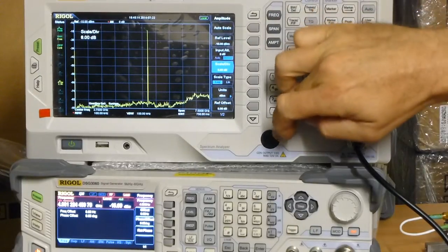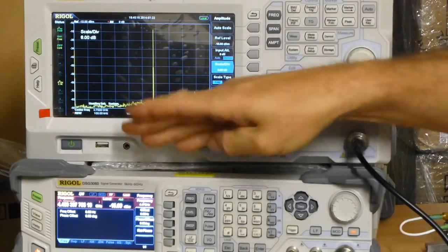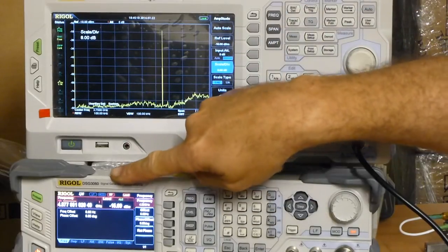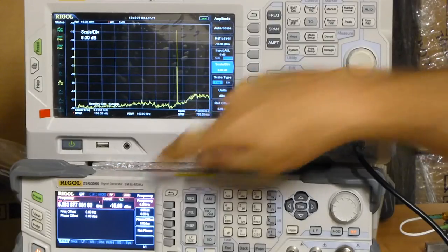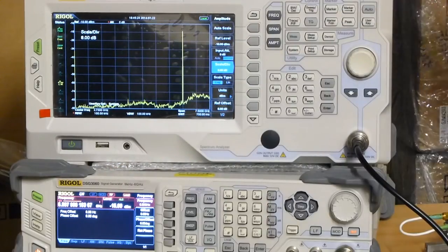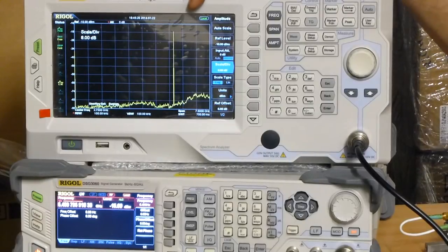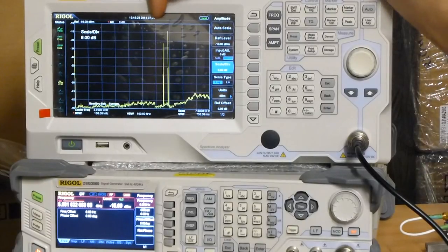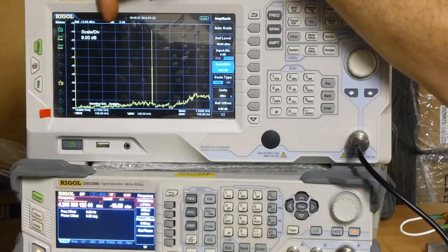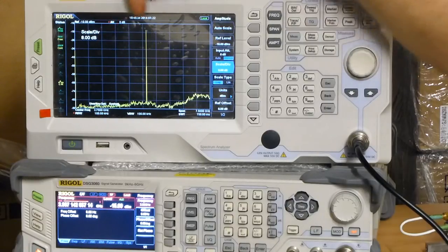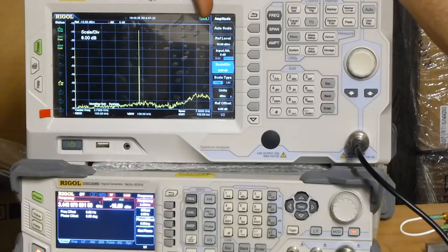This one is without a tracking generator, so I'm actually using Rigol's new DSG 3060 6GHz source to generate a sweep signal which you can see on the screen right now. You can see that sweep signal is stepping and sweeping, gradually stepping between 1 GHz down here and 6 GHz right up here.